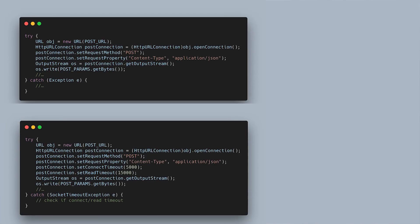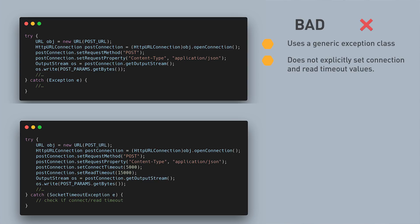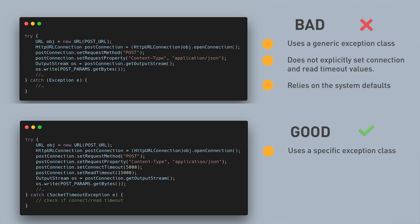We're going to take a look at two blocks of code: one properly equipped to handle transport exceptions, while the other not so much. Looking at the two blocks of code on the screen, we can see that the first one uses a generic exception class, which is not ideal, and it also does not explicitly set connection and read timeout values but rather relies on the system defaults. While the second one uses a specific or custom exception class and explicitly sets connection and read timeout values.